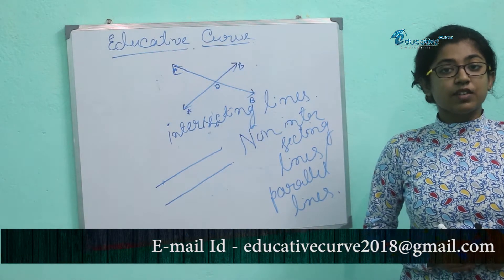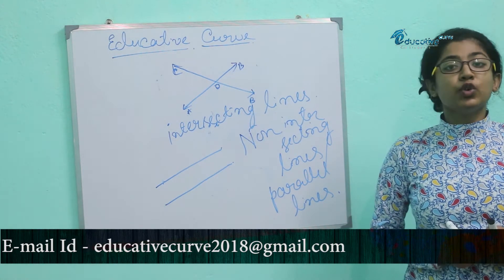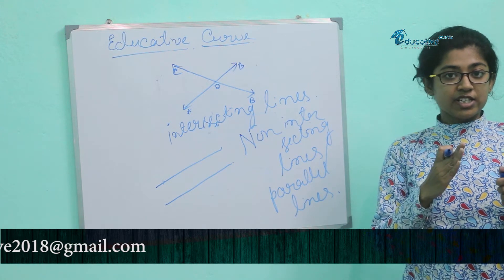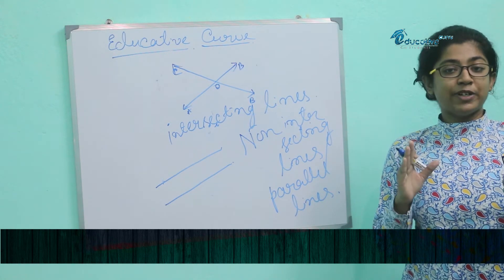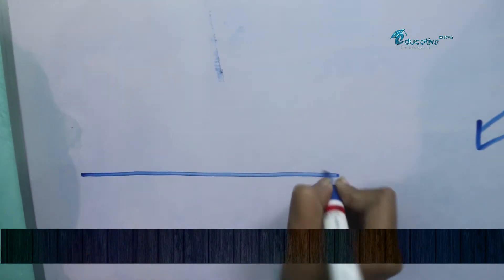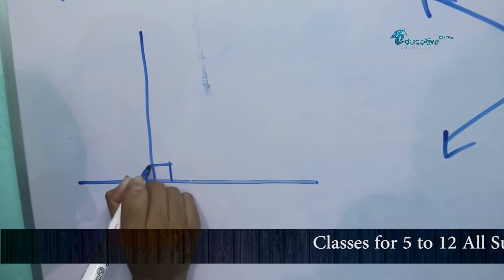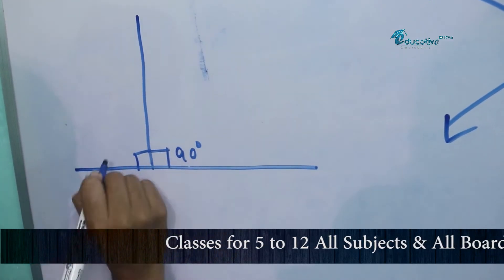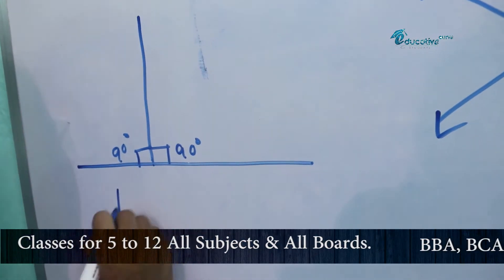Now we will discuss perpendicular lines. When two lines cross with each other and create a 90-degree angle, it's called perpendicular lines.